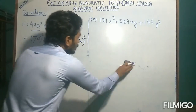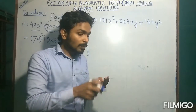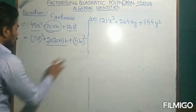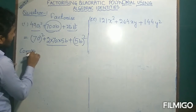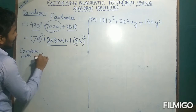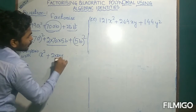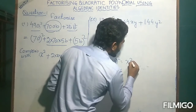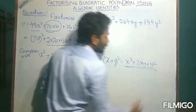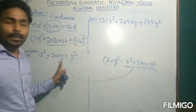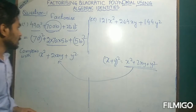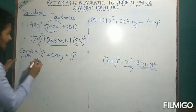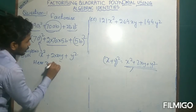Now we have to recall all four identities. Out of four identities, which one is similar to this three-term expression? It is compared with identity 1: x² + 2xy + y². You recall that identity 1 is (x + y)² = x² + 2xy + y². Comparing the two expressions: here there is a square, so x is 7a — writing here x = 7a.